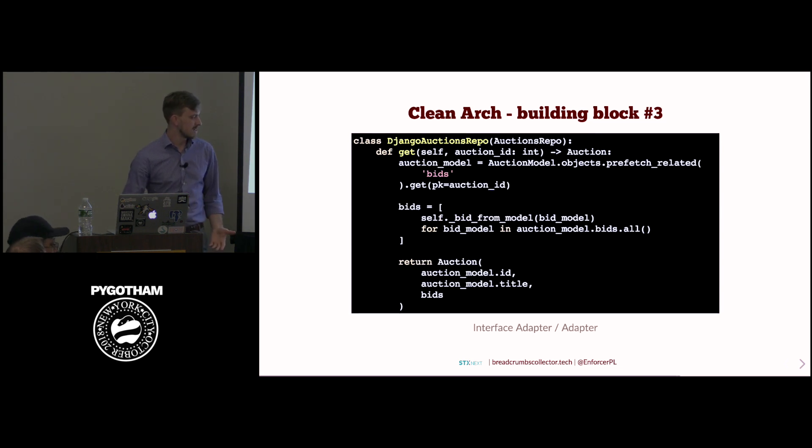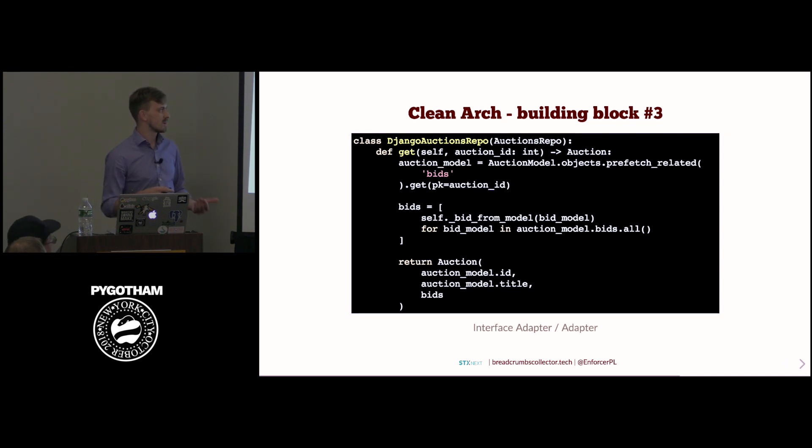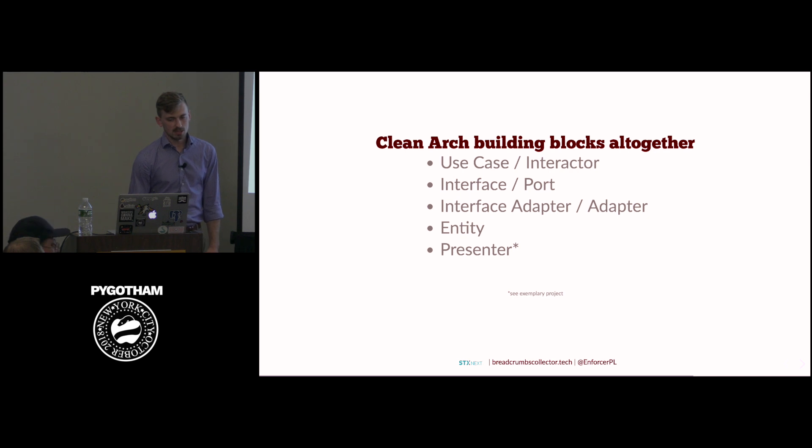And of course, in this case, when this is a pure Python class, which will be very simple to test, then we no longer rely on Django ORM to fetch our entities. So we have to update our adapter that will just be translating Django ORM models to these simple classes. And these are more or less it from the building blocks, except there is also a presenter, but I couldn't fit this into slides, so you can see the example project to see what's the role of it.